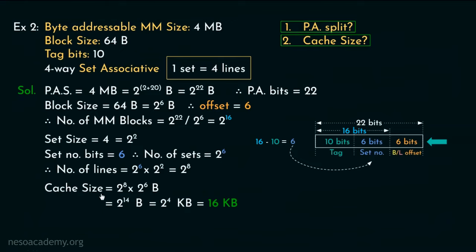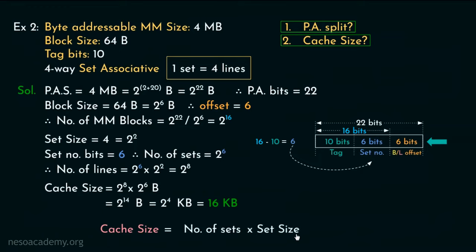Now observe the way we calculated the cache size. We first found the number of lines (2 to the power 8) and multiplied by the block size. Backtracking: to find the number of lines, we multiplied the number of sets (2 to the power 6) by the set size (2 to the power 2). So the formula is: cache size = number of sets × set size × block size. This formula will be very useful in solving various types of numerical problems, as we'll see in the next example.